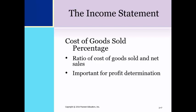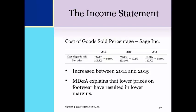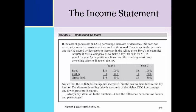The cost of goods sold percentage is the ratio of cost of goods sold to net sales. It is an important relationship for profit determination because cost of goods sold is the largest expense item for many firms. This is an illustration of the cost of goods sold percentage for Sage Inc. for 2014 through 2016. The percentage increase between 2014 and 2015 — the management discussion and analysis explained the reason was lower prices on athletic footwear. Since then, the firm has controlled costs more effectively and/or has been able to pass along price increases to customers.